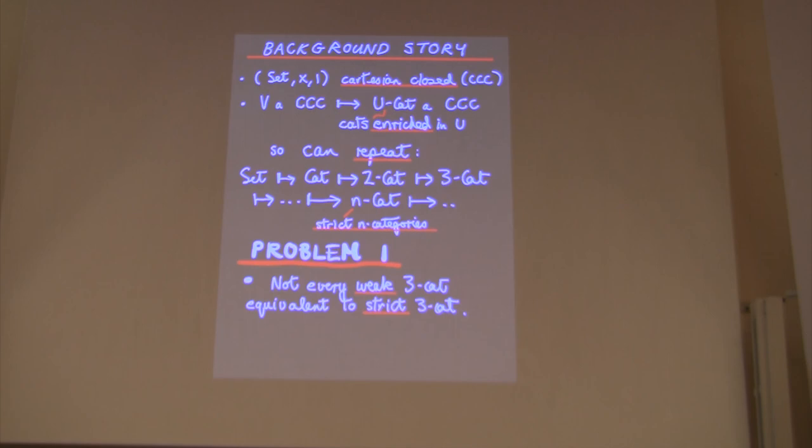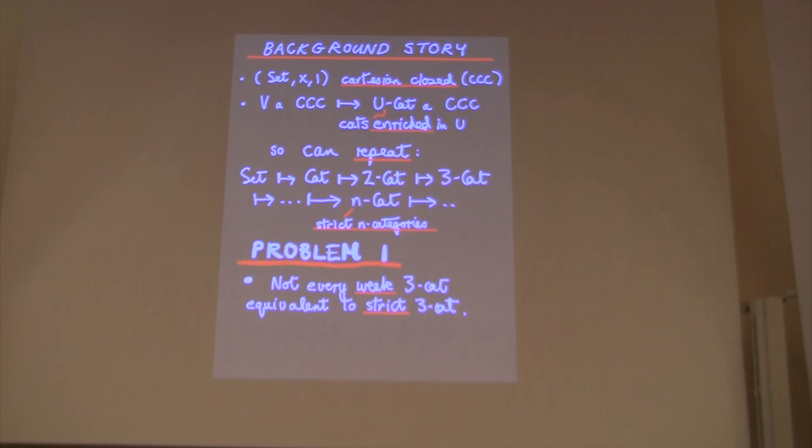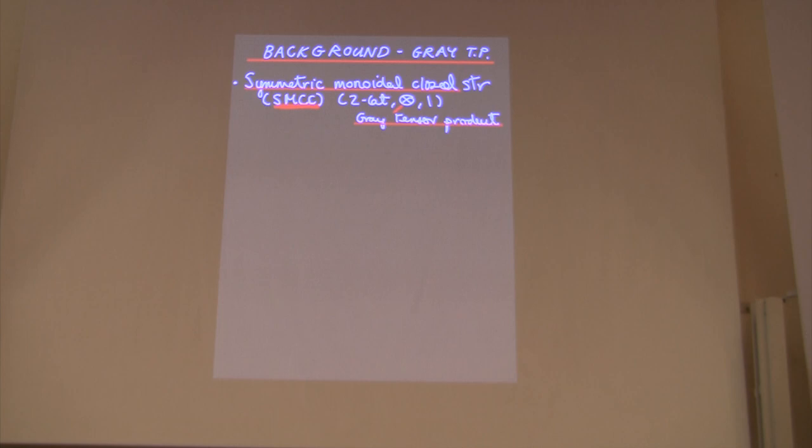So the problem is that for some purposes they're not sufficiently general for weak n categories. The problem arises at dimension 3. Not every weak n category is equivalent to a strict one. What this tells us is that to capture weak higher structures using an iterative enrichment approach, we have to leave the world of Cartesian closed categories. I still want to stick with developing structures in a purely categorical context, so some other sort of more general categorical structure. The first thing we can do is go from Cartesian closed categories to symmetric monoidal closed categories. That's Kelly's context, and that's great.